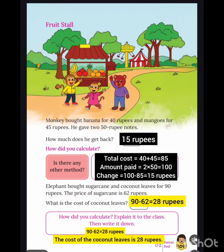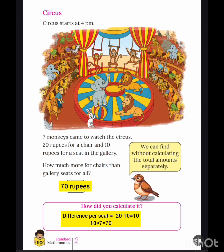Next, in the fruit stall: total cost is 15 rupees — total cost, amount paid, and change are calculated. In the circus, how much more for shades than gallery seats? For all 70 rupees.